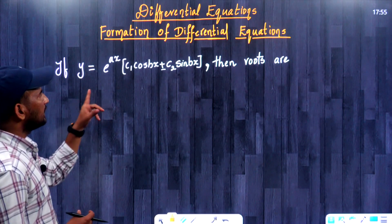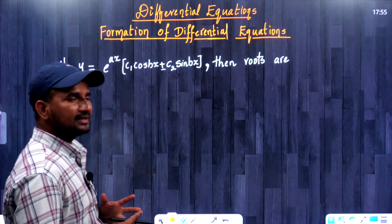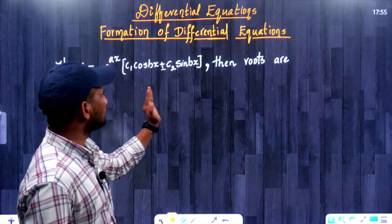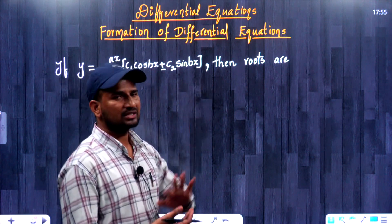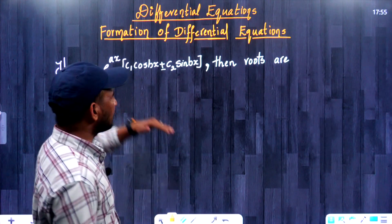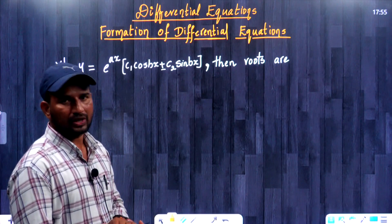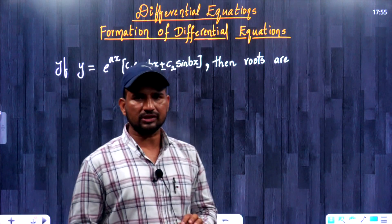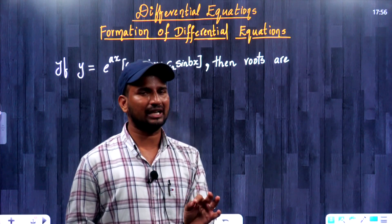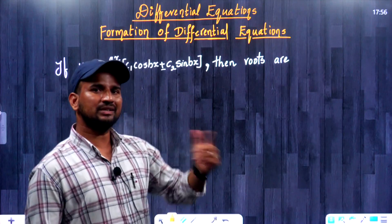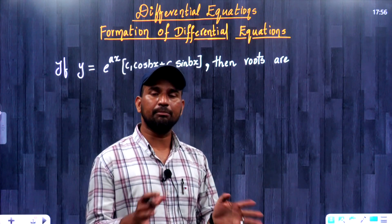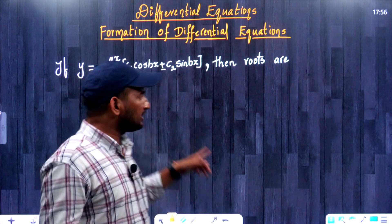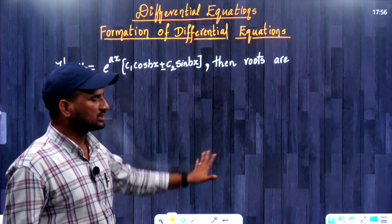The solution is: if y is equal to e power x into the whole multiple of c1 cos bx plus or minus c2 sin bx form, then c1 and c2 are general arbitrary constants. Sometimes c1 and c2 can also be replaced by numbers. If c1 and c2 are arbitrary constants, with the number of c1, c2 values replaced by numbers, the procedure will follow.